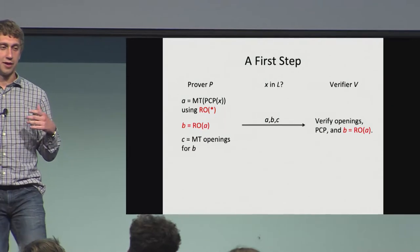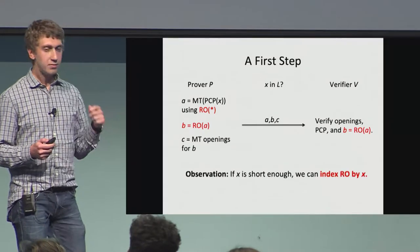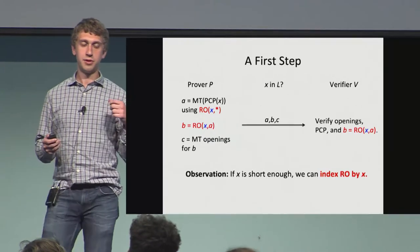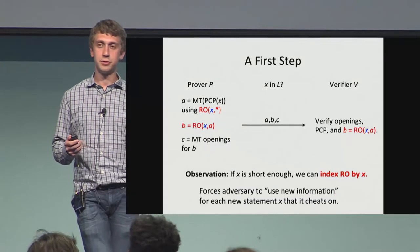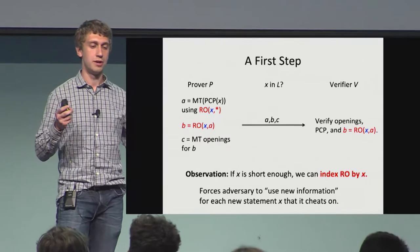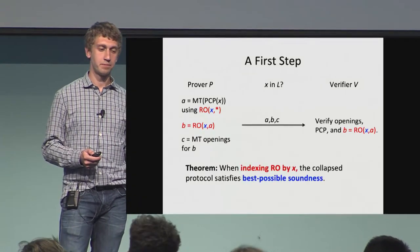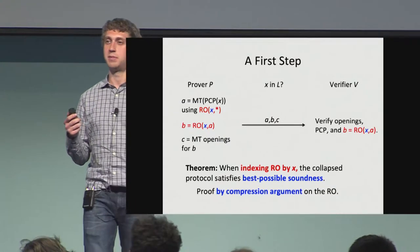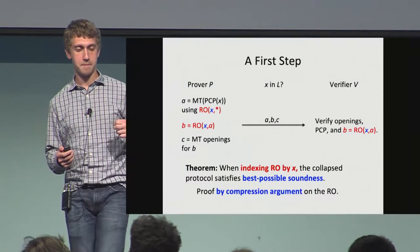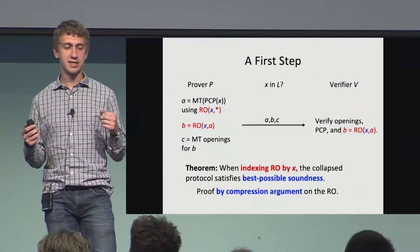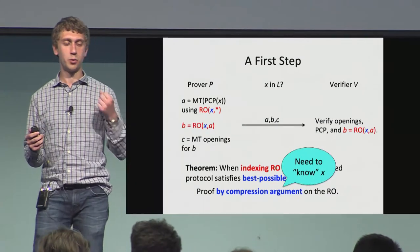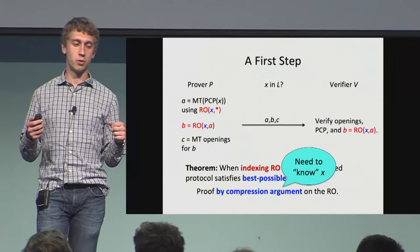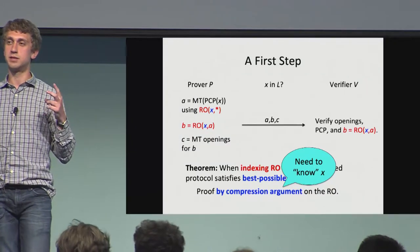What's the first step to get around this attack? We observe that if the statement is short enough, we can actually index the random oracle by the statement. If the random oracle is indexed by the statement, this at a high level forces the adversary to use some new knowledge for each new statement it cheats on. We formalize this idea with a compression argument and show that the resulting protocol actually satisfies best-possible soundness. The key reason this works is that whenever the adversary queries the random oracle, we can use the fact that it must have known the statement at hand.